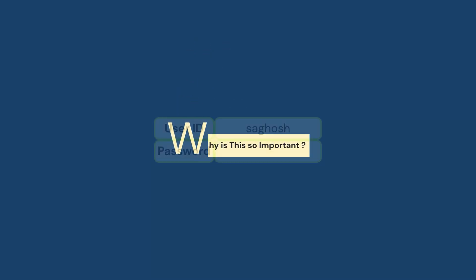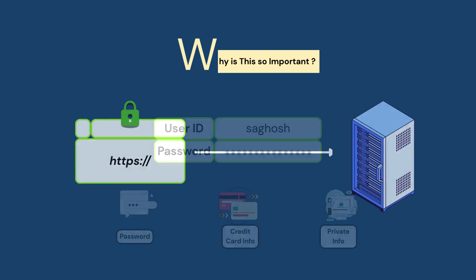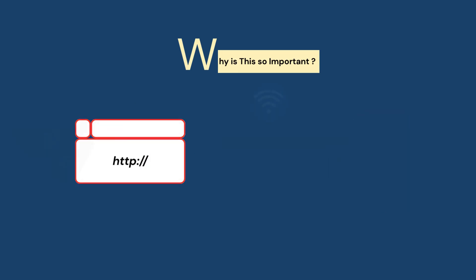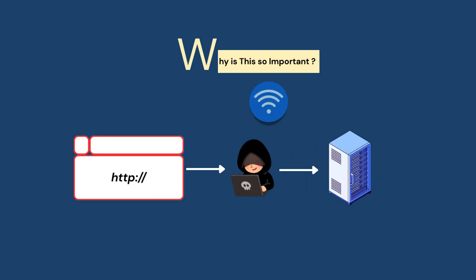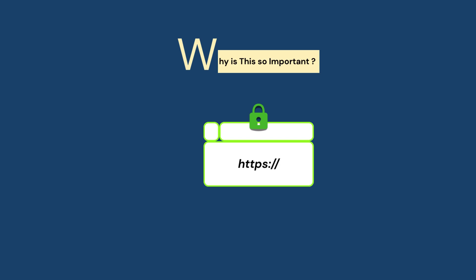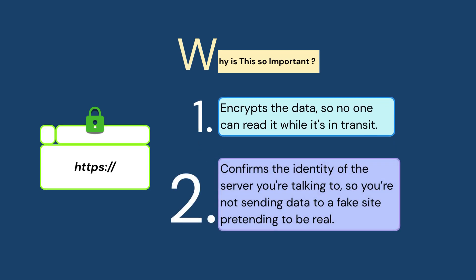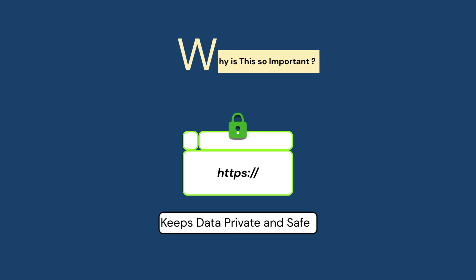So why is this so important? Well, anytime you type your password, credit card information, or any personal detail, it travels from your browser to the website server. If SSL or TLS isn't there, a hacker sitting on the same Wi-Fi as you — let's say at a coffee shop — could literally see what you are sending. SSL or TLS basically does two things: one, encrypts the data so no one can read it while it's in transit, and two, confirms the identity of the server you are talking to, so you're not sending data to a fake site pretending to be real. In simple words, TLS or SSL keeps your internet communication private and safe.